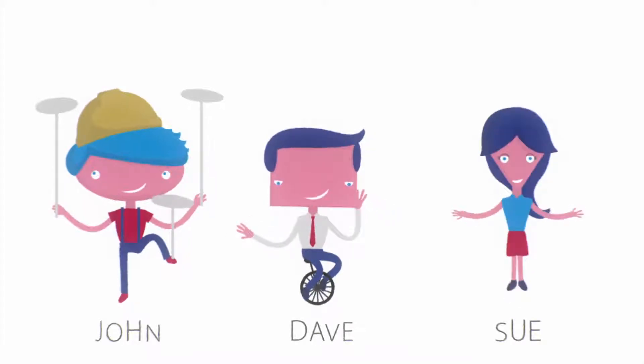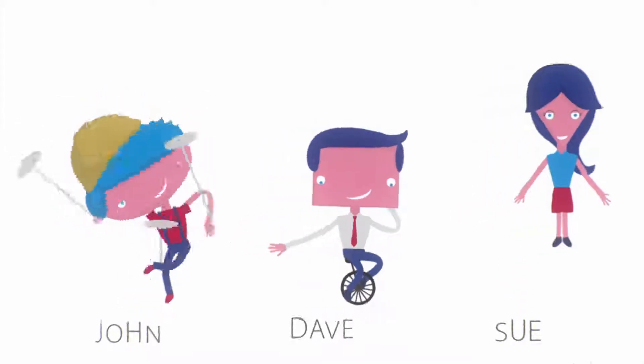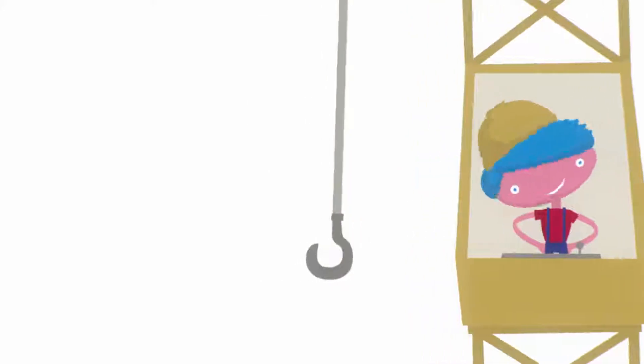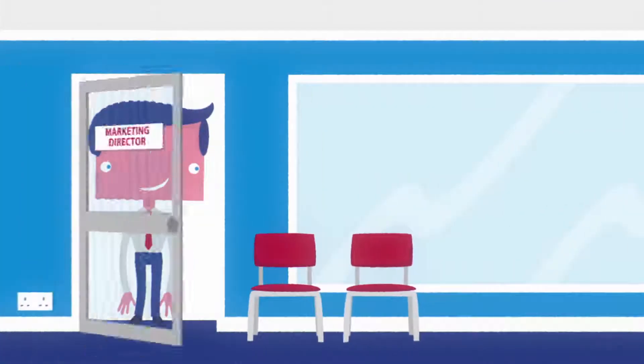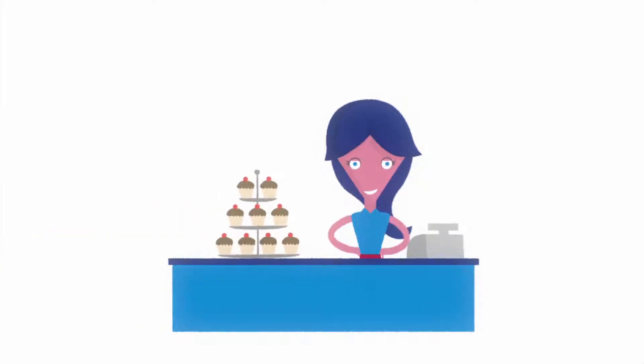Meet John, Dave and Sue. They're not really circus performers. John runs a construction company. Dave is an MD with quite a lot of employees, and Sue is self-employed with her own business.